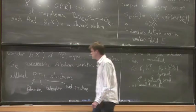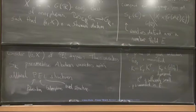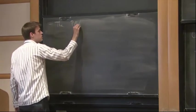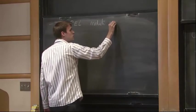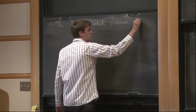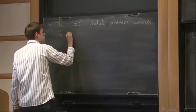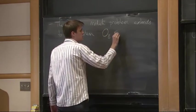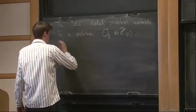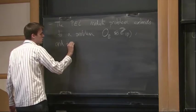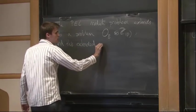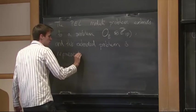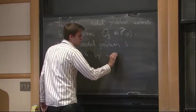And the third condition is that P is unramified in E. And the last condition is the most important one. So this PEL moduli problem extends to a problem defined over OE tensor ZP. And this extended problem is representable by a smooth and quasi-projective scheme.